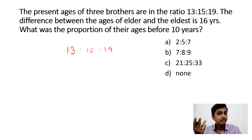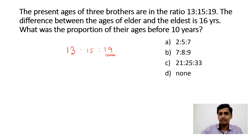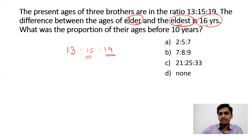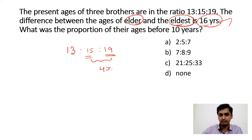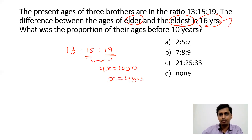The eldest brother has 19 parts and the elder has 15 parts. Their age difference is 19 − 15 = 4 parts, which equals 16 years. So 4 parts = 16 years, meaning 1 part = 4 years. Now we find the proportion of their ages before 10 years.